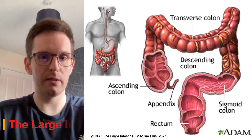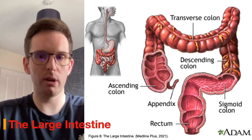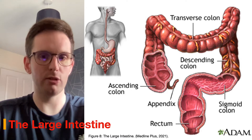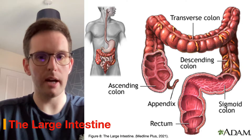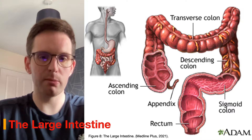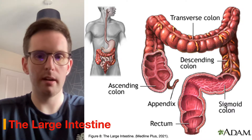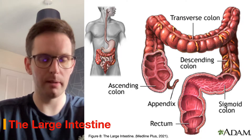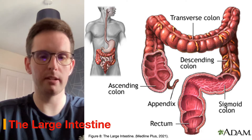The large intestine is divided into four areas: the ascending, transverse, descending, and sigmoid colon. The sigmoid colon leads to the rectum, which terminates at the anal canal. The function of the large intestine is to absorb electrolytes and salts from undigested material, move waste products into the rectum, and eliminate them via the anus. Its structure is thicker than the small intestine and does not contain a large lining of villi. However, it has goblet cells — specialised epithelial cells that secrete mucus to lubricate faeces and assist their movement into the rectum.